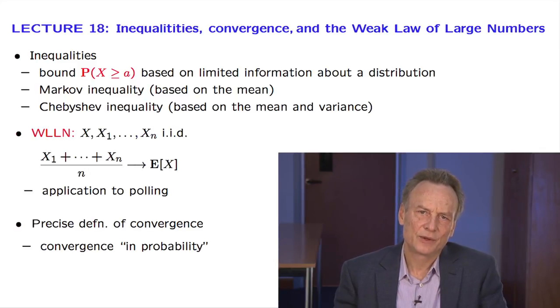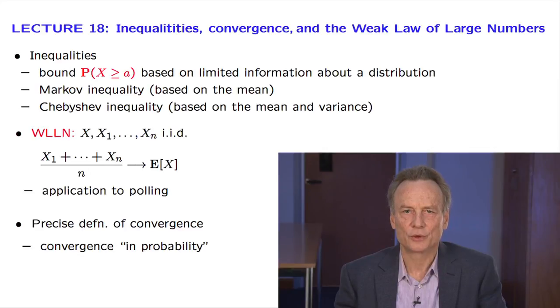Finally, we will have to deal with a technical issue. The weak law of large numbers talks about the convergence of a random variable to a number. For this to make sense, we need to define an appropriate notion of convergence. We will introduce one such notion that goes under the name of convergence in probability.